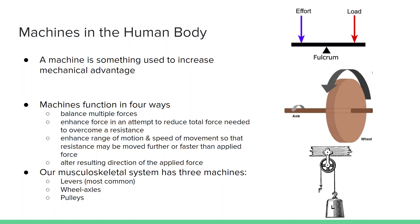A machine is something used to increase mechanical advantage, meaning we want to decrease the force that we have to apply to increase the speed or acceleration. Machines function in four ways. They balance multiple forces. They enhance the force in an attempt to reduce total force needed to overcome a resistance. They enhance range of motion and speed of movement so that resistance may be moved further or faster than the applied force. And they alter the resulting direction of the applied force.